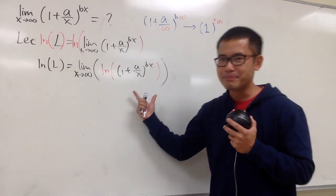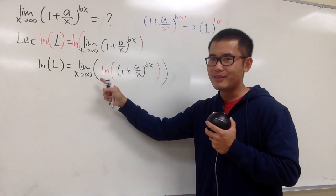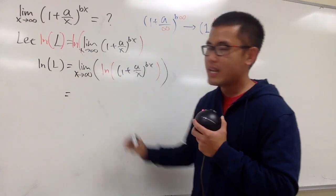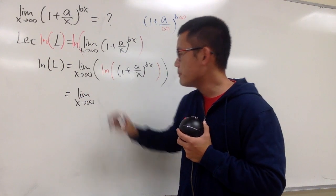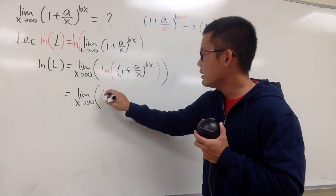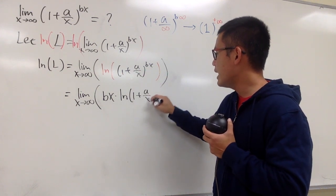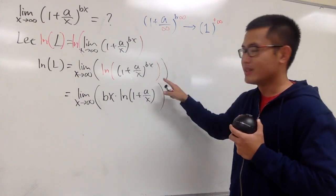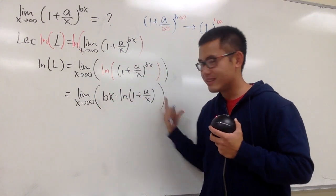Because we have ln of something to a power, we can bring the power to the front by the log property — this is not the power rule, just the log property. So we have the limit as x goes to infinity of bx times ln(1 + a/x).